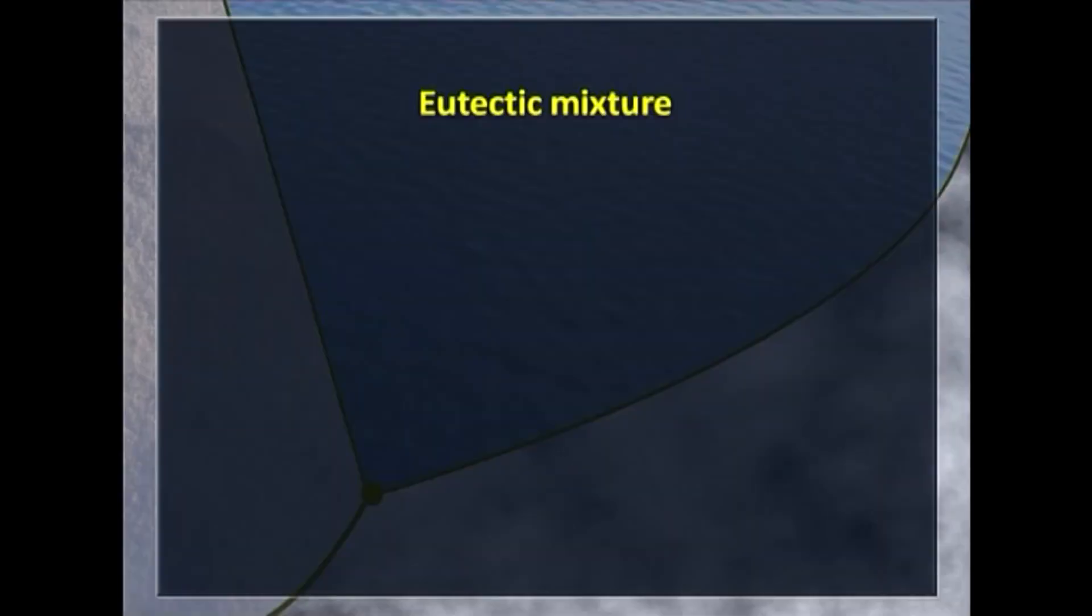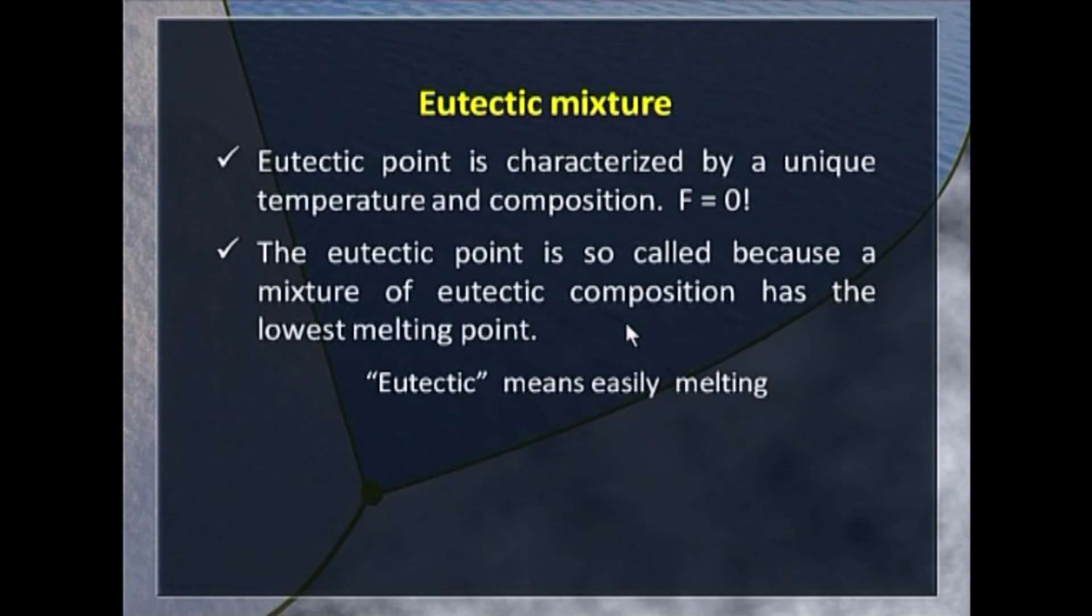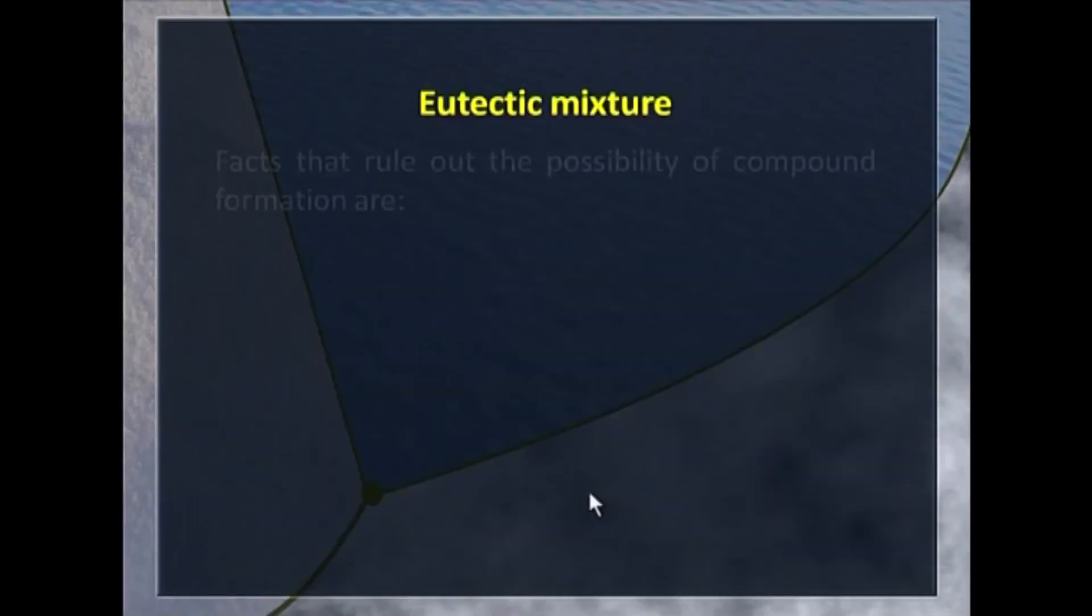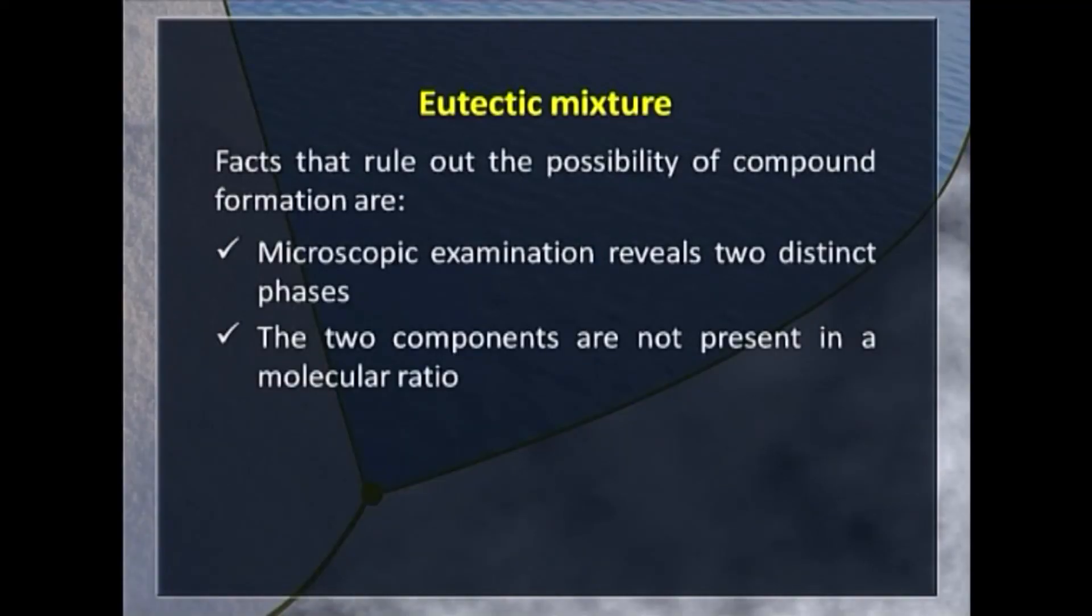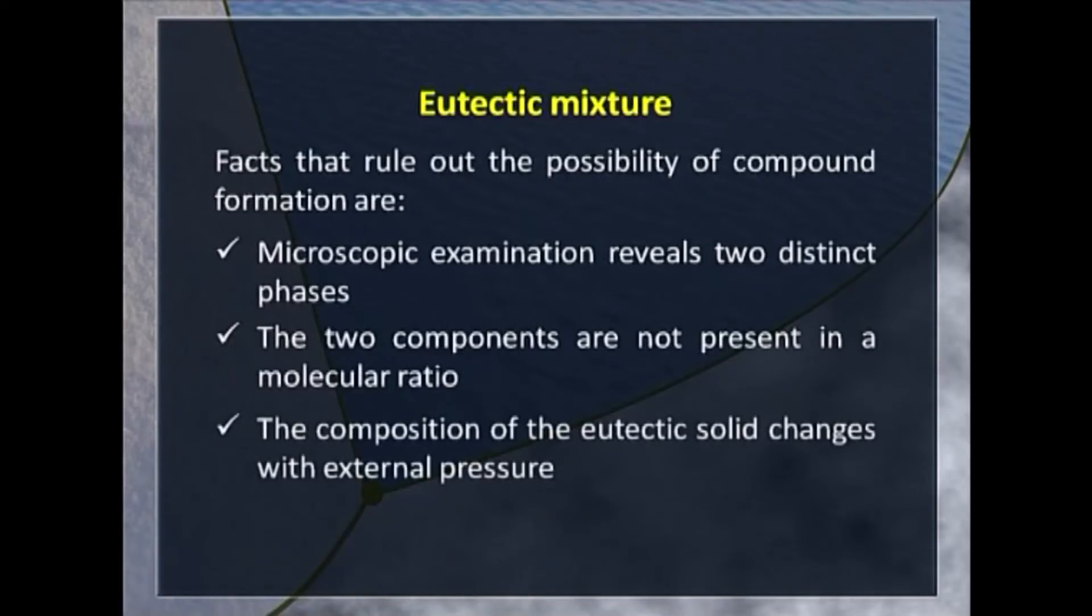Some elaboration of eutectic mixture is needed. Eutectic point is characterized by a unique temperature and composition. Reason being, number of degrees of freedom is zero. Why is it called eutectic point? Eutectic means easily melting. The mixture has a sharp melting point and it was thought that it is not a mixture, it is a compound that is formed. Now we have to rule out that possibility. How do you rule out? If you watch it in the microscope, you can see distinct phases. The two components are not present in the molecular ratio. It happens in the case of compound. For example, H2O, they are in 2 is to 1 ratio. But here, the components are not present in molecular ratio. Not only that, if you change the pressure, composition of the eutectic solid changes.